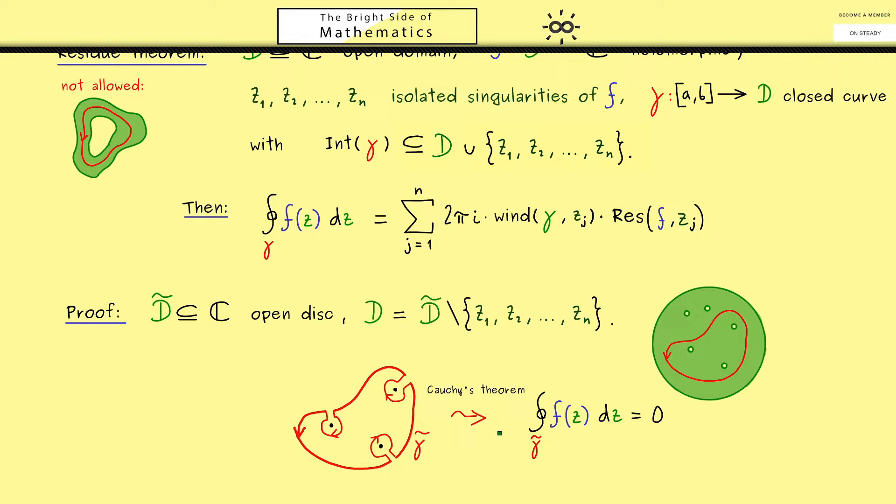So maybe that's good enough for the proof now. The important thing is that first you remember this important formula here. So the residue theorem tells you you need this to calculate a contour integral.